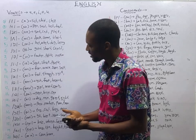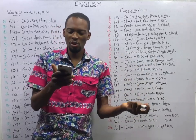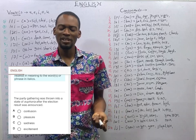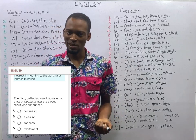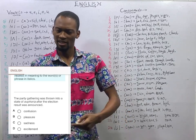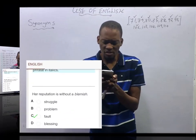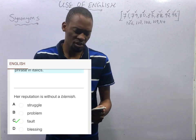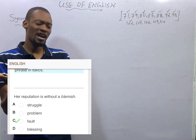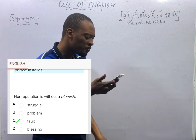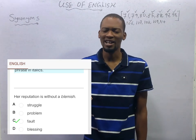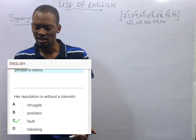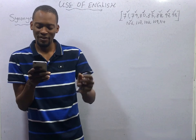'The party gathering was thrown into a state of euphoria after the election result was announced.' Euphoria means excitement — a feeling or state of intense excitement. Next: 'Her reputation is without blemish.' Blemish means fault. If her reputation is without blemish, it means her reputation is without fault. Fault is nearest in meaning to blemish. Blemish does not mean struggle, blessing, or problem. It generally means a fault.